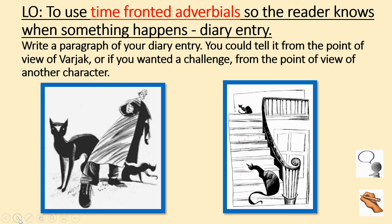Today, choose one of the parts of Vajak Poor that you've read — perhaps today — and write one paragraph. Really focus on using your time-fronted adverbials so the reader knows when something has happened. Write it as a diary entry from the point of view of Vajak, or if you want to challenge yourself, write from the point of view of another character. This should take about 10 minutes.